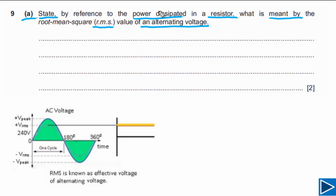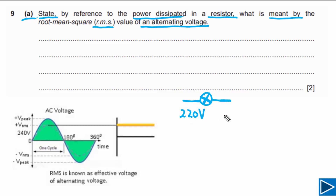Since the question asks us to give reference to power dissipated in a resistor, we have to mention power dissipated in our answer. Let's understand what RMS value of AC is with a simple example. Imagine we have a filament light bulb with a normal operating voltage of 220 volts and a power rating of 100 watts.